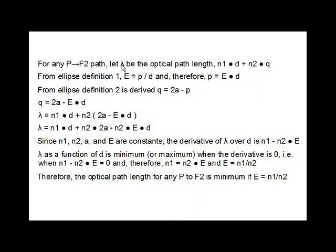We invent a variable lambda which represents the optical path length from any P of the ellipse to F2. Lambda equals N1 times D plus N2 times Q. From the first ellipse definition, E equals P over D, and therefore P equals ED. From the second definition, we derived P plus Q equals 2A, and therefore Q equals 2A minus P. Substituting ED for P, we get Q equals 2A minus ED.